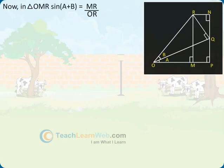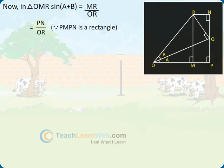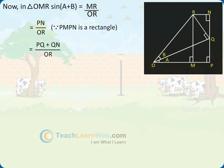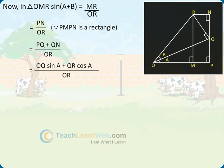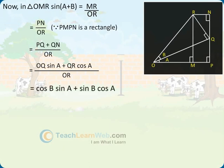Sine of A plus B equals MR divided by OR, which equals PN divided by OR, since PMPN is a rectangle. This equals PQ plus QN divided by OR, which equals OQ sine A plus QR cos A divided by OR, giving cos B sine A plus sine B cos A.